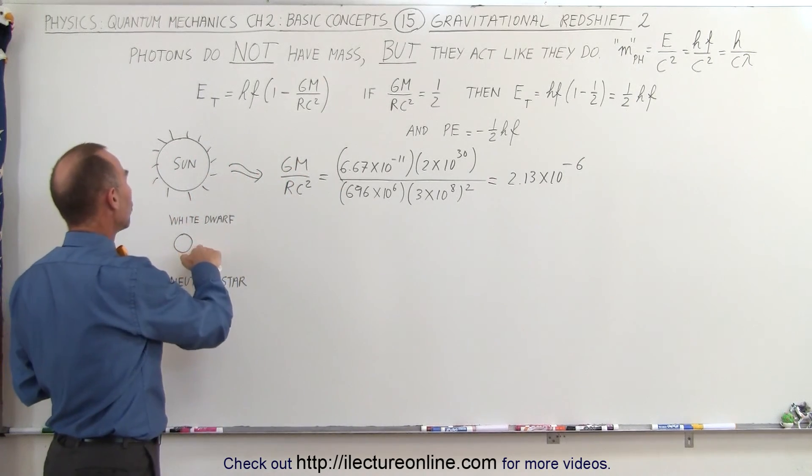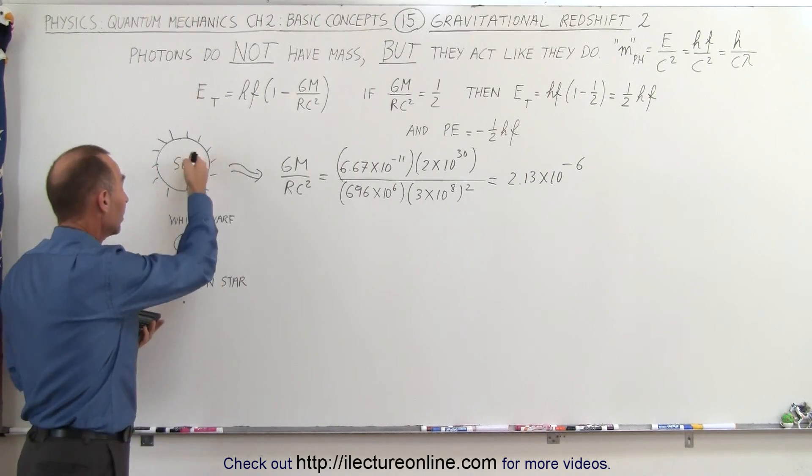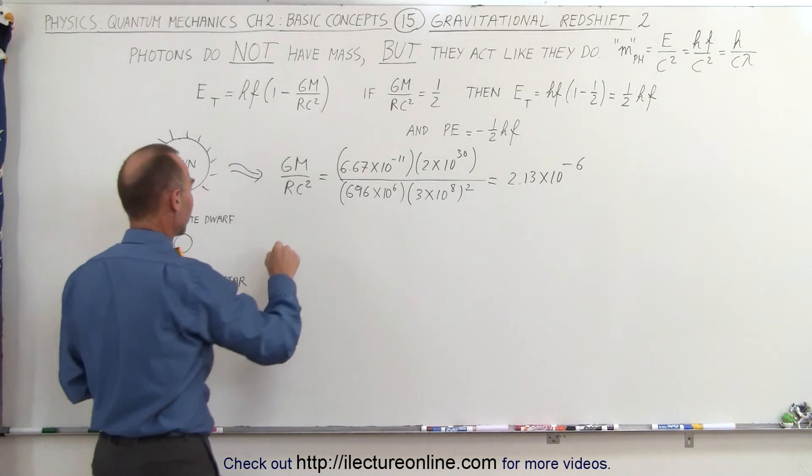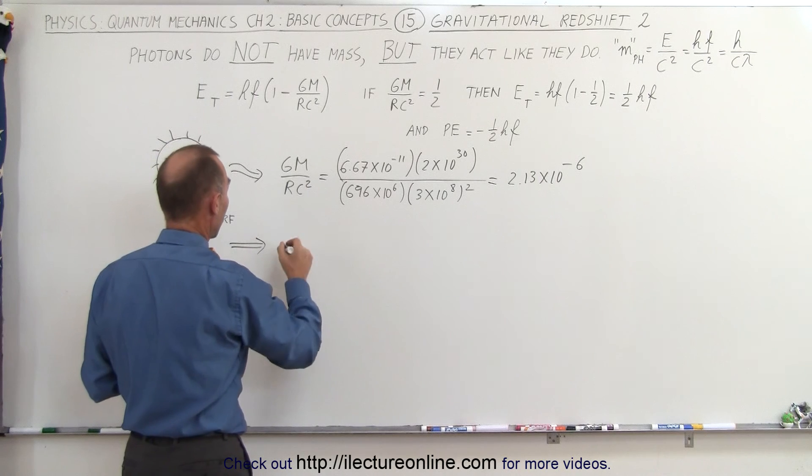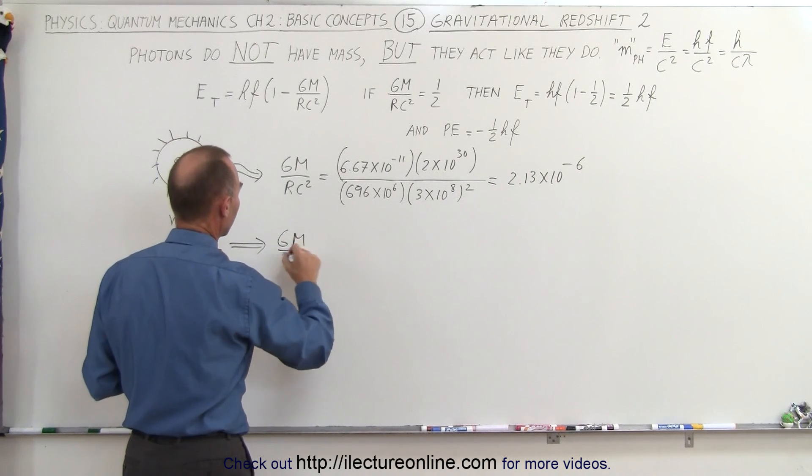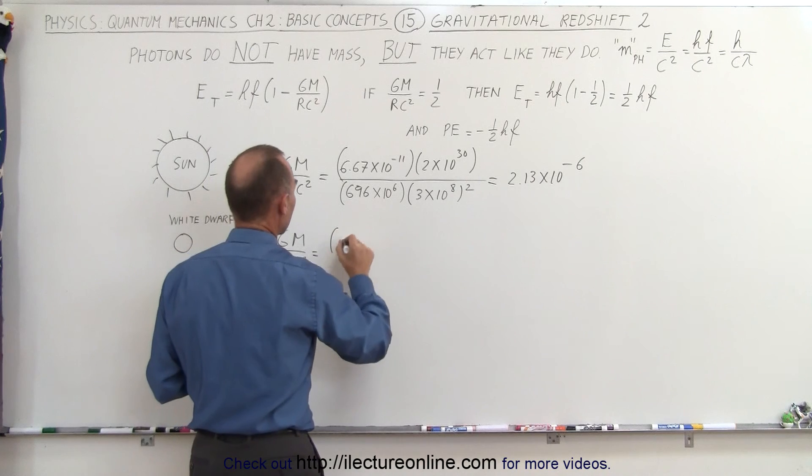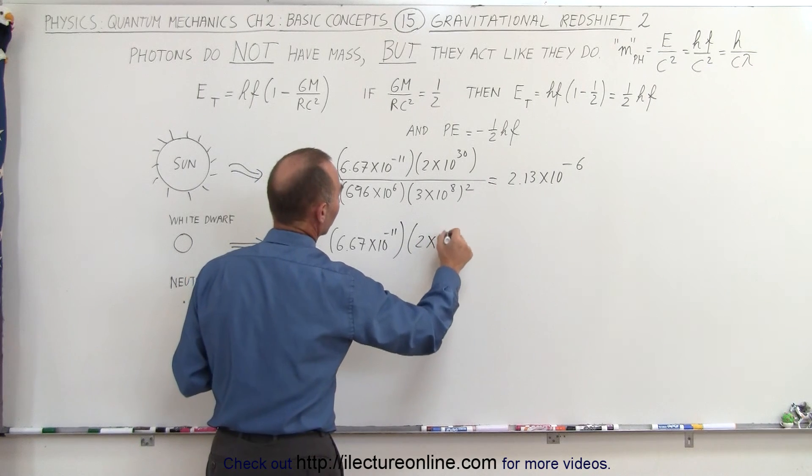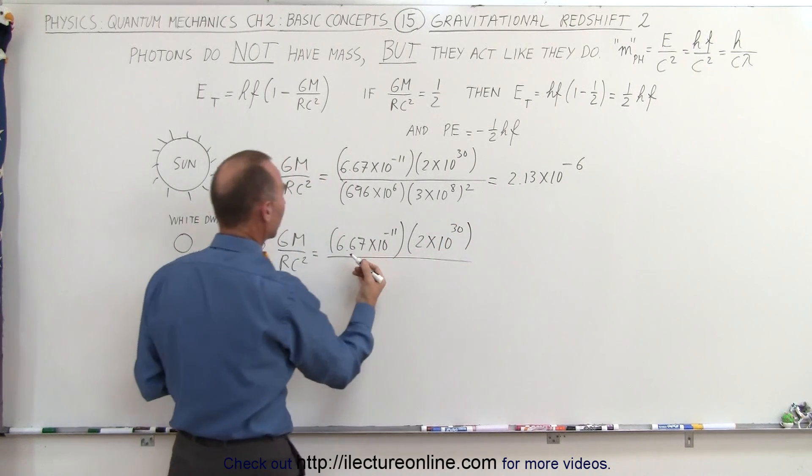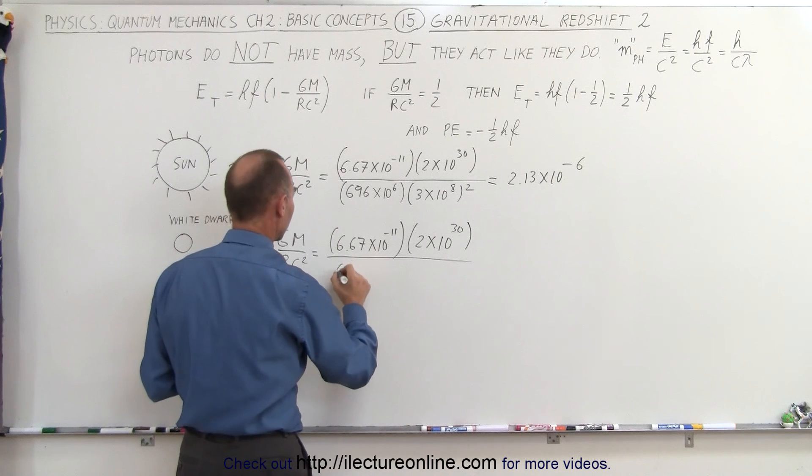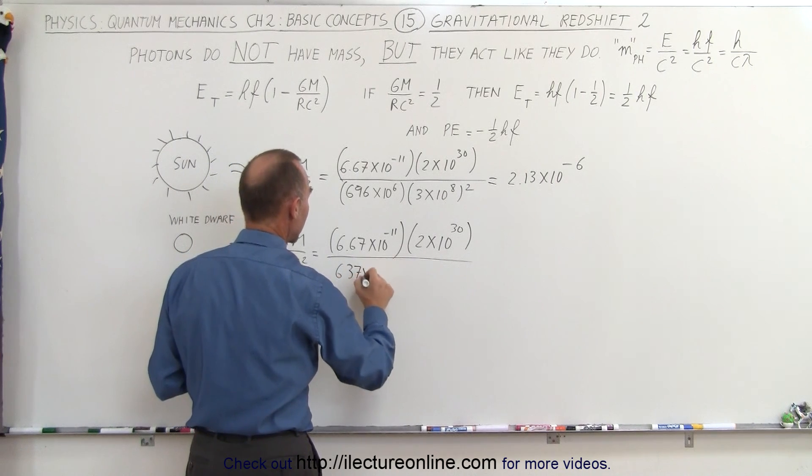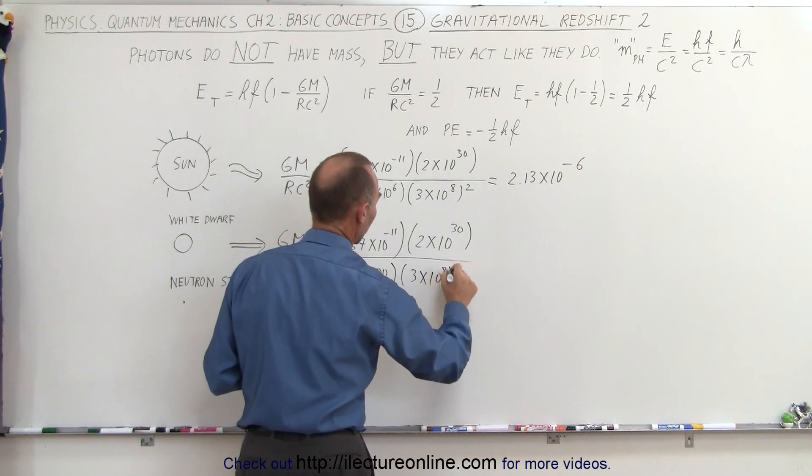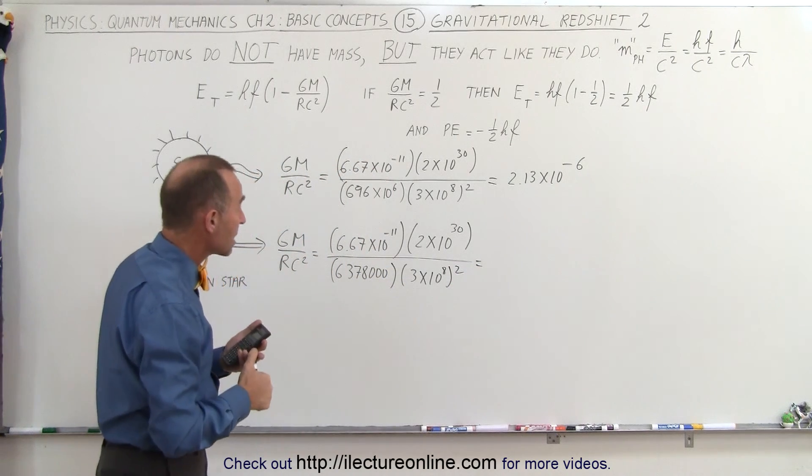How about a white dwarf? Let's say we have a white dwarf with the mass of the sun, but the radius of a white dwarf is approximately the radius of the earth, which gives us a larger fraction. GM divided by RC squared will be 6.67 times 10 to the minus 11 times the same mass of the sun, divided by the radius of the earth, 6,378,000 meters, times C squared, 3 times 10 to the 8th quantity squared.